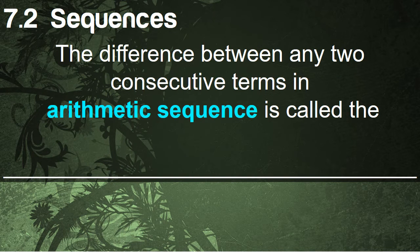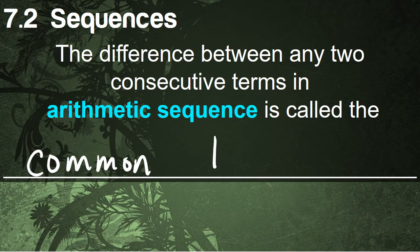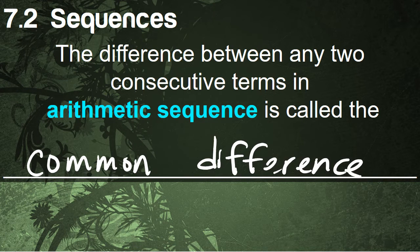The difference between any two consecutive numbers in an arithmetic sequence is also called the common difference. Whether we're adding a positive or negative number, that constant value we add is the common difference of the arithmetic sequence.